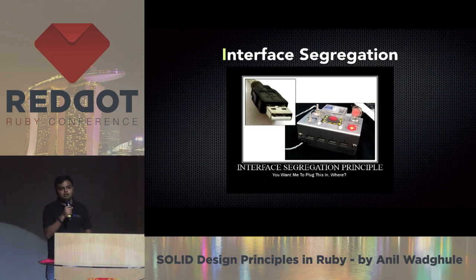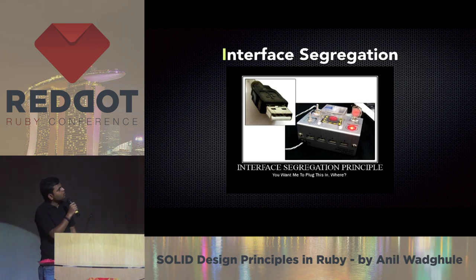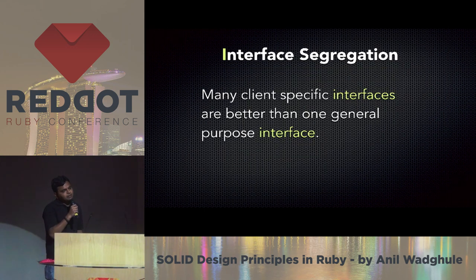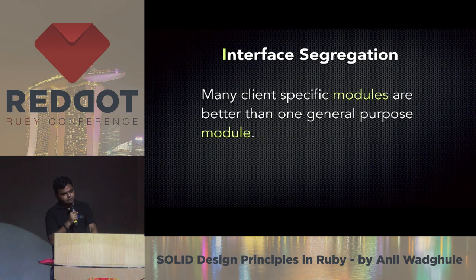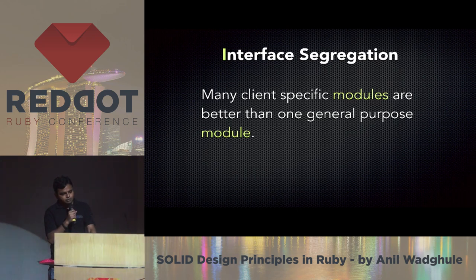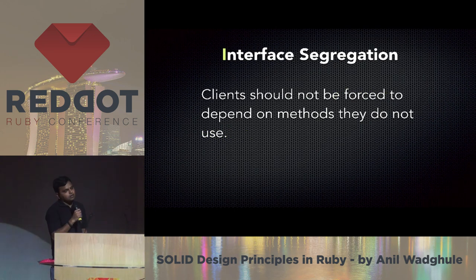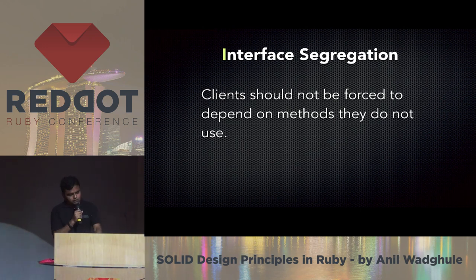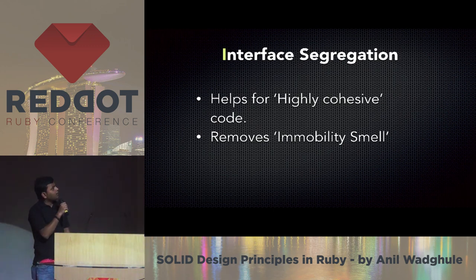The next principle is Interface Segregation. This principle says many client-specific interfaces are better than one general-purpose interface. In Ruby we don't have interfaces — we have modules and classes — so: many client-specific modules are better than one general-purpose module or class. Clients should not be forced to depend on methods they do not use. Following this principle helps write highly cohesive code and removes immobility smell.